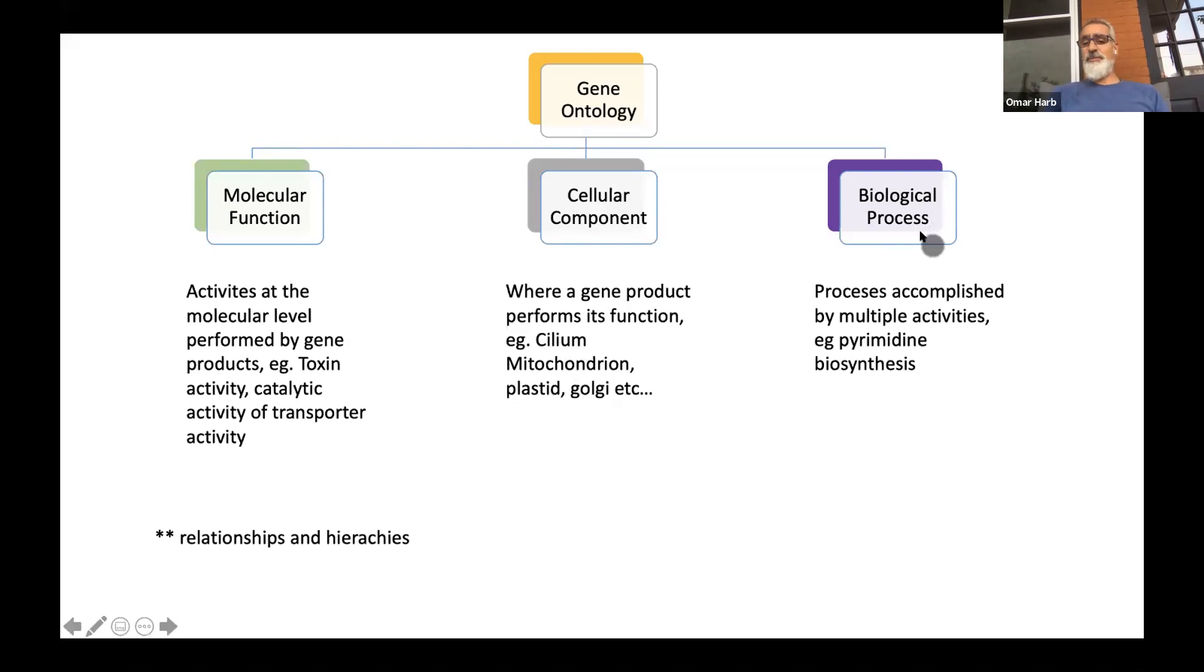And finally, the biological process talks about a process that a gene is involved in, like pyrimidine biosynthesis, where there will be many genes involved in that process. That ontology can be associated with your gene, which may be one of the enzymes in the pyrimidine biosynthetic pathway.